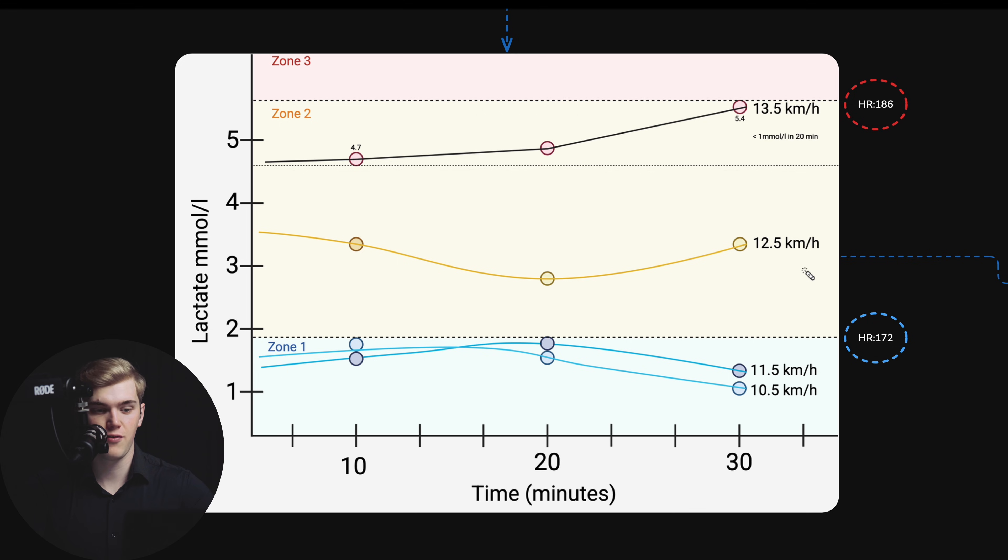Instead of being below 2 millimoles, being like 1.5, 1.6, they jump to around 3.3. However, during the 20-minute mark, they go a little bit down and then they come back up. Now, as we can see, even though there's only a 1 kilometer per hour increase here, lactate behaves very differently. There is a huge jump in blood lactate values. However, 12.5 kilometers per hour is not very comfortable to run at for 30 minutes. But after looking at these results, I knew I had to come back a third time and increase the speed once again by 1 kilometer per hour. And here, once again, we have a quite drastic jump in blood lactate values.